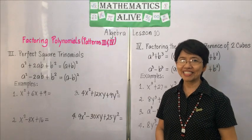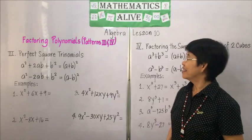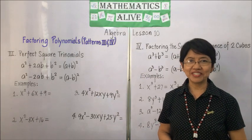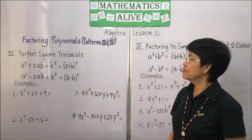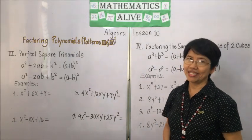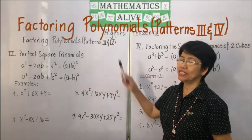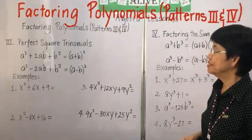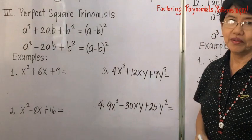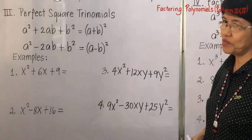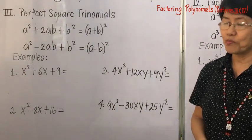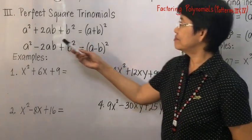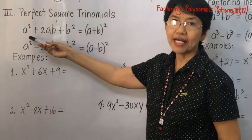Welcome to Mathematics Alive, Algebra Lesson 10. This is a continuation of factoring polynomials, and we have patterns three and four this time. Pattern number three: perfect square trinomials.